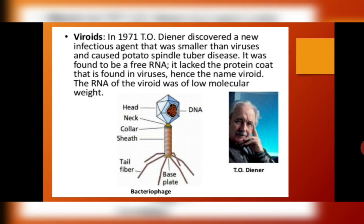What are viroids? In 1971, T.O. Diener discovered a new infectious pathogenic agent that was smaller than viruses and caused the potato spindle tuber disease. It was found to be free RNA — nothing but a free RNA — and it lacked the protein coat found in viruses. Hence it is known as a viroid, meaning devoid of the protein coat of a virus. The RNA of the viroid was of low molecular weight.